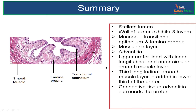The outermost layer is the connective tissue adventitia, which surrounds the ureter and blends with the connective tissue of the posterior abdominal wall. That completes the microscopic anatomy of ureter.